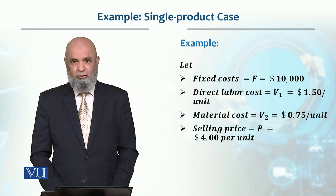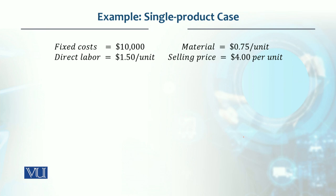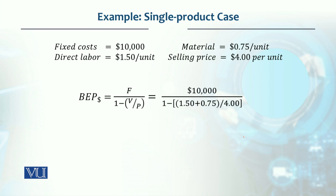Selling price in this case is $4 per unit. With this data given, if we calculate the break-even point in dollar terms, we use the formula F divided by (1 minus V/P). If we want it in units, then the denominator is (P minus V). Since we are solving in monetary terms, our fixed cost is $10,000.